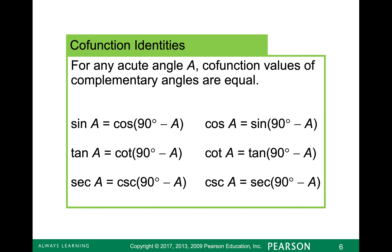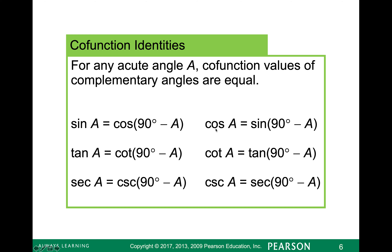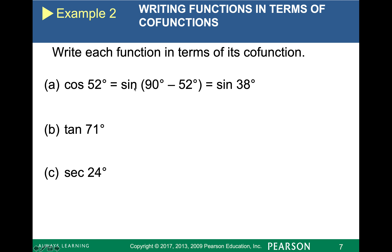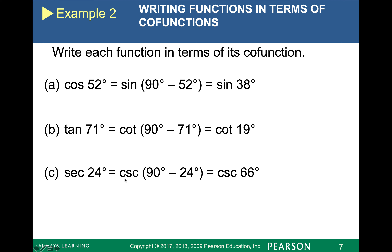We're not going to use this a ton as we move on, but we want to make sure we're noticing it in the pattern for our special value angles. So to practice: cosine of 52 — cosine is related to sine, so the cosine of 52 would be the sine of 90 minus 52, which is 38. Tangent is related to cotangent, so cotangent of 90 minus 71 gives 19. Secant is related to cosecant, so we get 66. These are helpful because you might know cotangent of 19 but not know tangent of 71, and we can use cofunction identities to swap out the actual trig function.